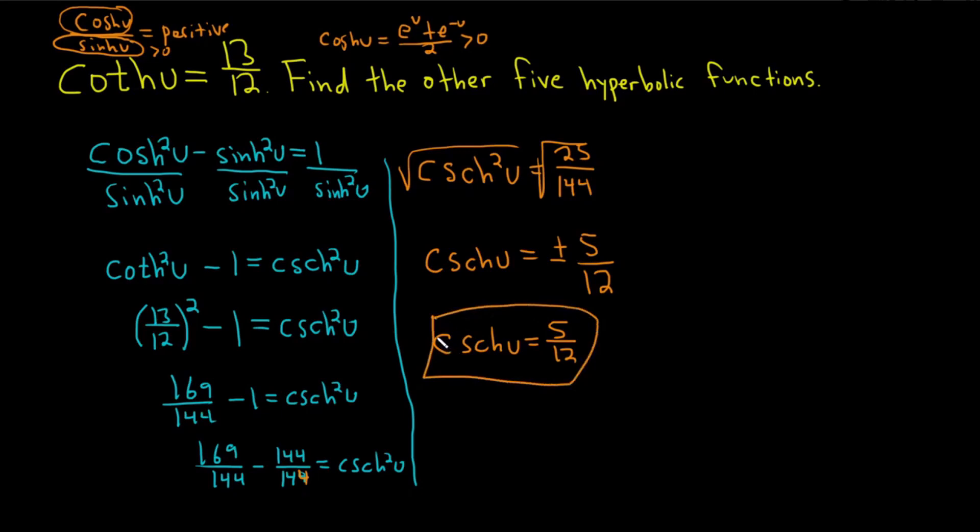Okay. So what do we have so far? We have the hyperbolic cotangent, we have the hyperbolic cosecant. Well, we know that the hyperbolic sine is equal to 1 over the hyperbolic cosecant. It's the reciprocal of this one. So this is just 12 fifths. These are reciprocal functions.